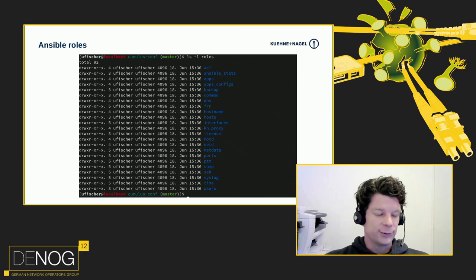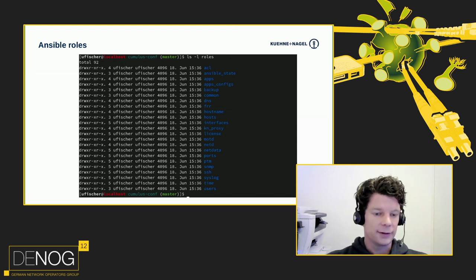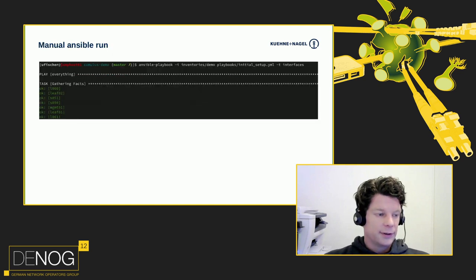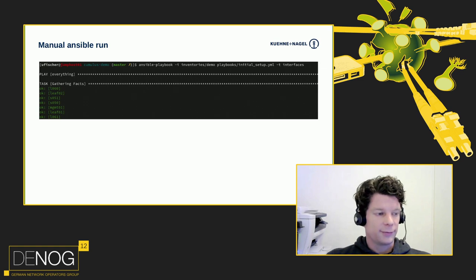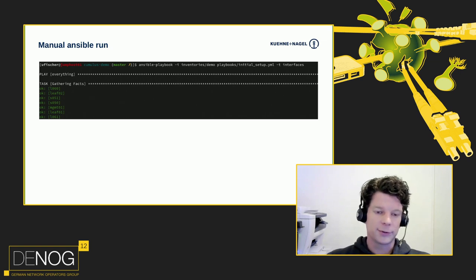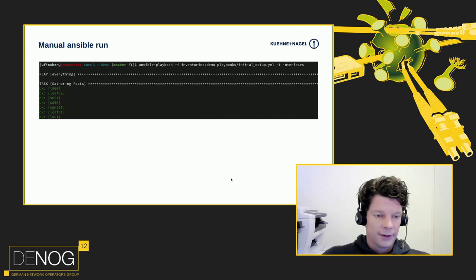That was ready and working, so I started with the management switches since they were already up and running before the rest was done — that also worked. But I was always doing this by hand from the command line; every run was done manually, and you need to remember all the switches and options with Ansible. That's why we started to look into a pipeline tool.